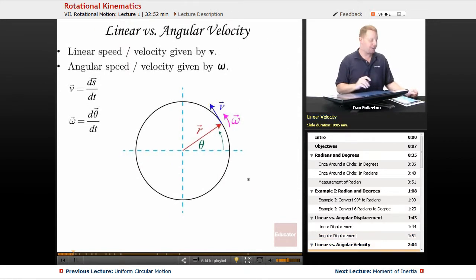If we talked about velocity in the same way, linear speed or velocity is given by the v vector. Angular speed or velocity is given by the squiggly w, the omega vector. Where velocity is the derivative of position with respect to time, angular velocity is the derivative of angular position or displacement with respect to time.